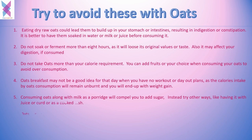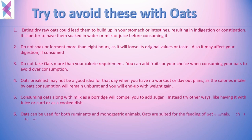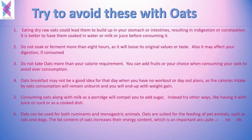Oats can be used as feed for both ruminant and monogastric animals, including pets such as cats and dogs. The fat content of oats increases their energy value, which is an important attribute in horse feed.